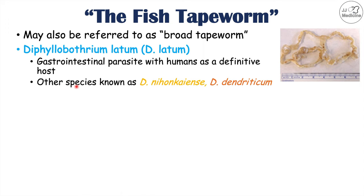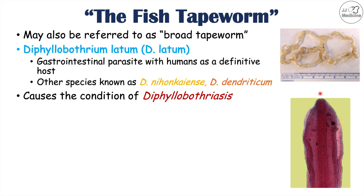The other common fish tapeworm species are Diphyllobothrium nihonkaiense and Diphyllobothrium dendriticum. Each species comes from a different type of fish. D. latum can come from fish like pike and perch; D. nihonkaiense can come from salmon; and D. dendriticum can come from whitefish. Being infected with these Diphyllobothrial species causes the condition known as diphyllobothriasis, which can be due to infection with any of these three species.